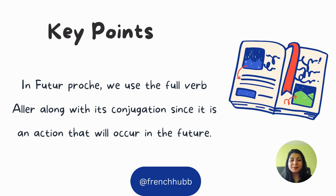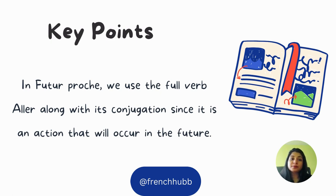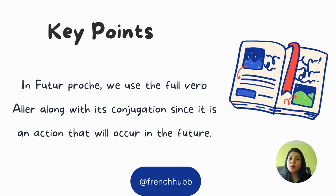So what are the key points? In futur proche, we use the full verb aller along with its conjugation, since it is an action that will occur in the future. Do not omit the aller verb in its infinitive form if the action going to be done in the future is 'to go' in English. Use the conjugation to show future tense, but also use aller as an infinitive verb because that is what is happening in the future.